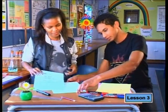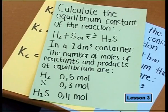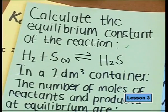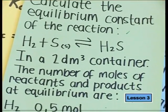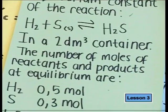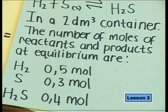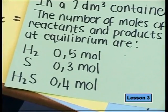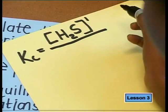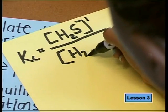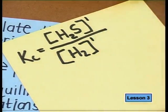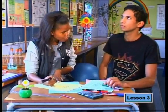Question two: calculate the equilibrium constant for the reaction where hydrogen reacts with sulfur to produce hydrogen sulfide in a 2 dm³ container. At equilibrium: 0.5 moles of hydrogen, 0.3 moles of sulfur, and 0.4 moles of hydrogen sulfide. Hydrogen sulfide is the product, so it goes on top. Hydrogen and sulfur are reactants, so they go at the bottom. But sulfur is a solid, so it doesn't go into the expression.